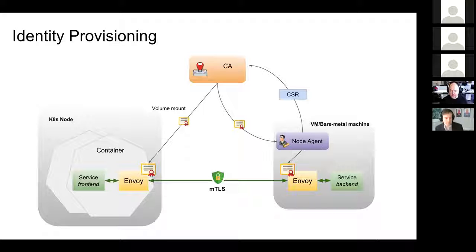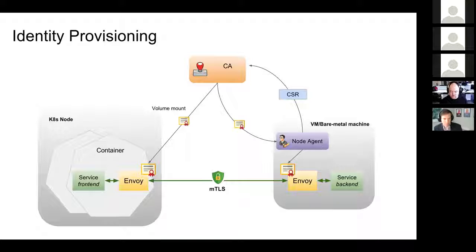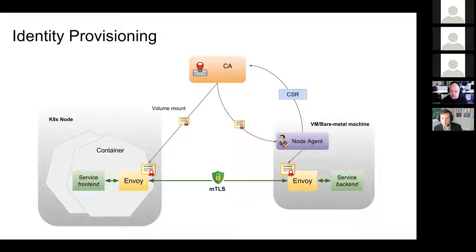The right part shows what we're doing for point two, releasing end of this month. The scope of point two is to extend the existing service from a Kubernetes cluster to support VMs. In the VM, the way we get a key and certificate is different. We have a node agent running at each VM that generates a public/private key pair, generates a CSR, sends it to the CA, gets a certificate, and puts it to Envoy. The private key never leaves the node.